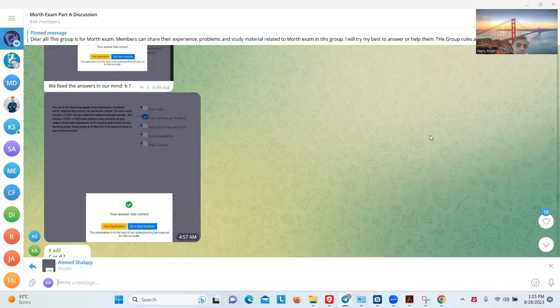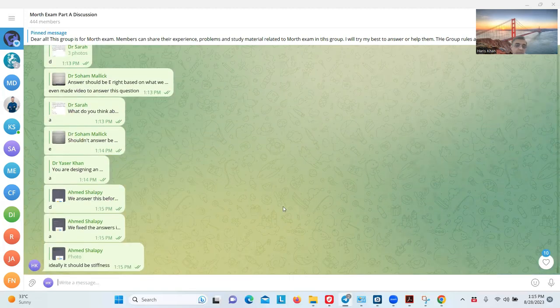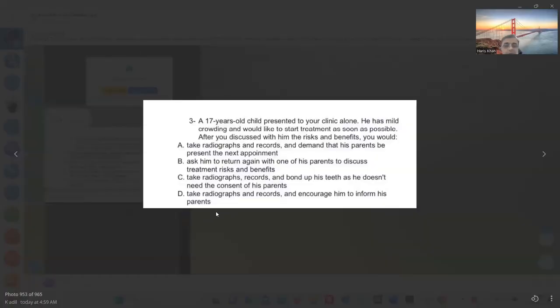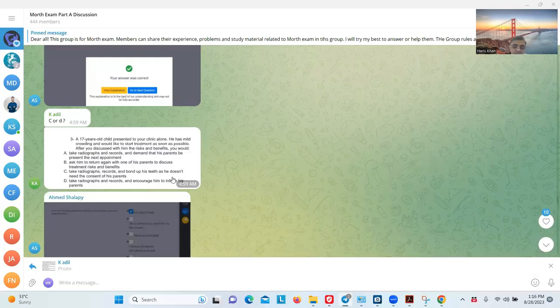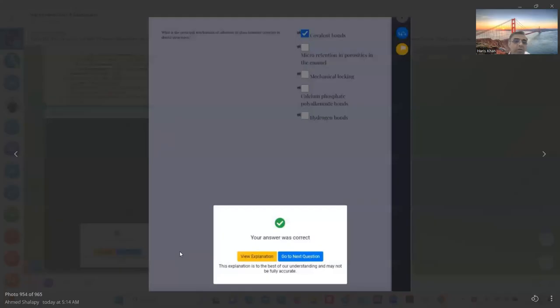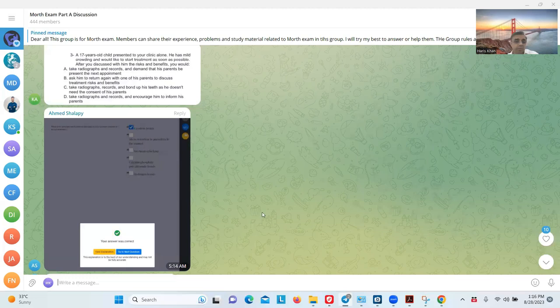Also A, because we decided that the orthodontist might need to reposition—in case the orthodontist needs to reposition the implant at a different location, you might have the option to do it. Otherwise, it should be immediately. It's not low modulus of elasticity. I will change it. It should be D. B is stiffness here. A 20-year-old patient presents to your clinic alone. He has mild crowding and would like to start treatment. Guess what the problem is. Take radiographs and records and demand that his parents would know. Ask the patient to return again with the parents. Take radiograph, record, and bond his teeth. Need to consent. C.